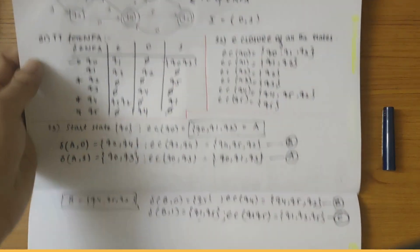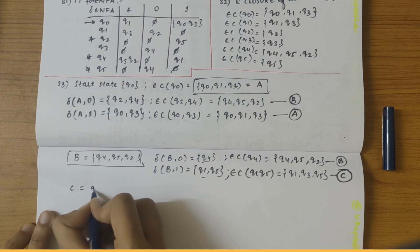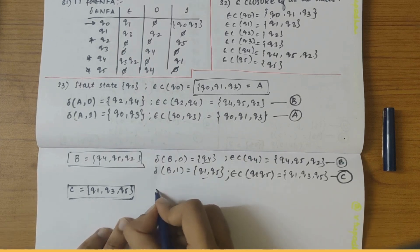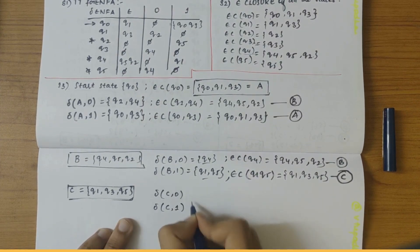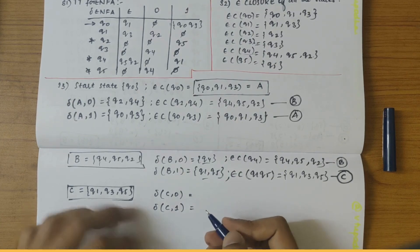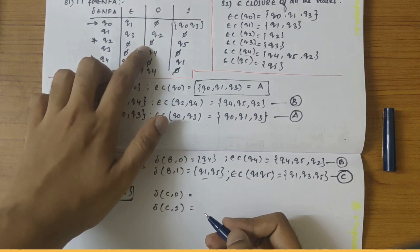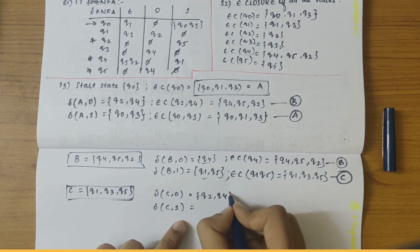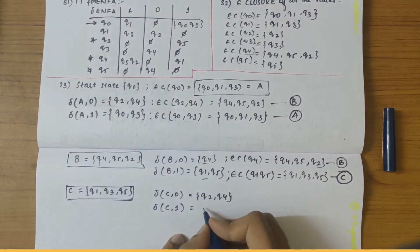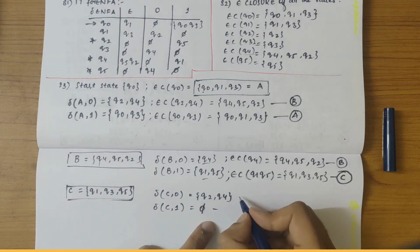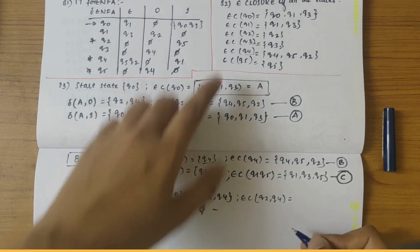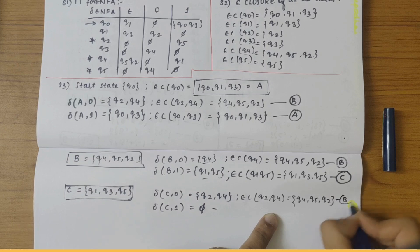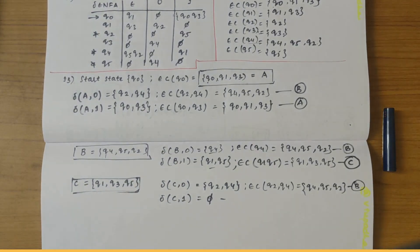Our next step is to take constant C. C = {Q1, Q3, Q5}. Transition of C on 0: Q1 gives nothing, Q3 gives Q4, Q5 gives nothing — so Q2 and Q4. Transition of C on 1: gives nothing — just dash. Epsilon closure of {Q2, Q4} gives {Q4, Q5, Q2}, which is similar to constant B. So we write B here.